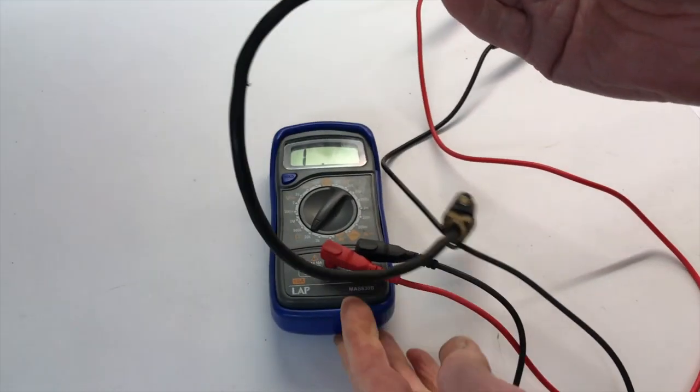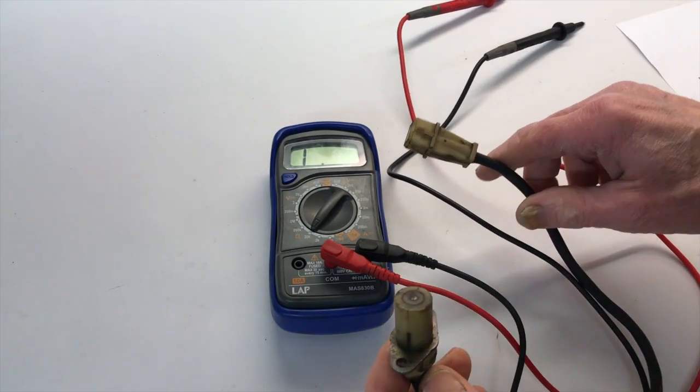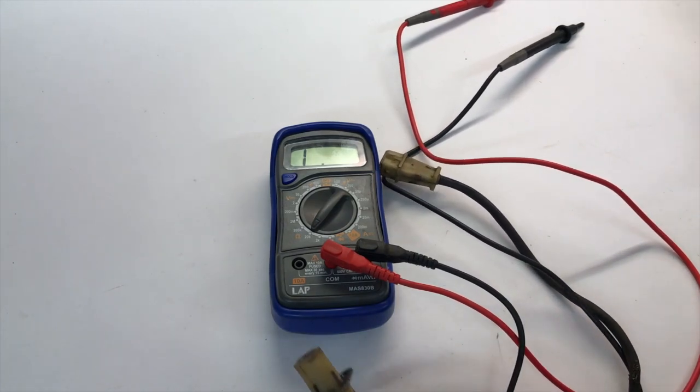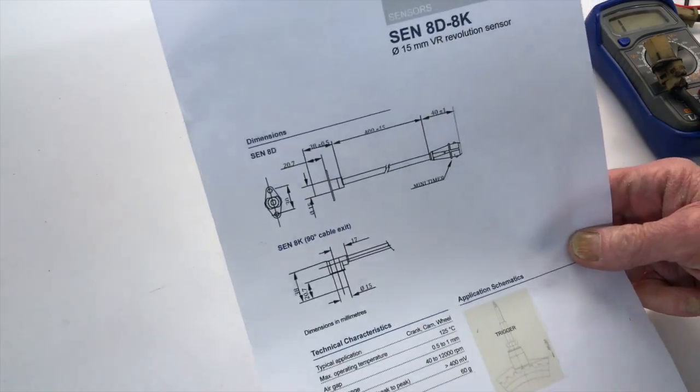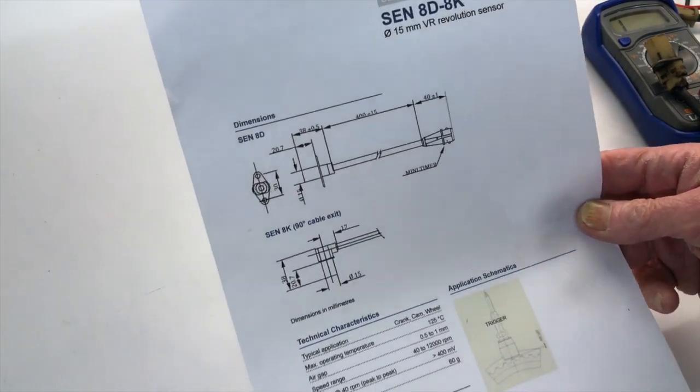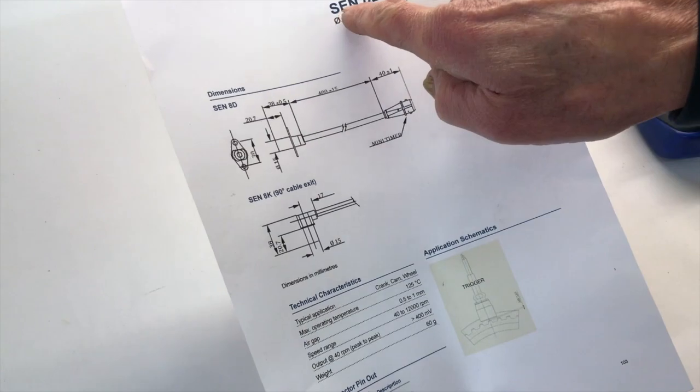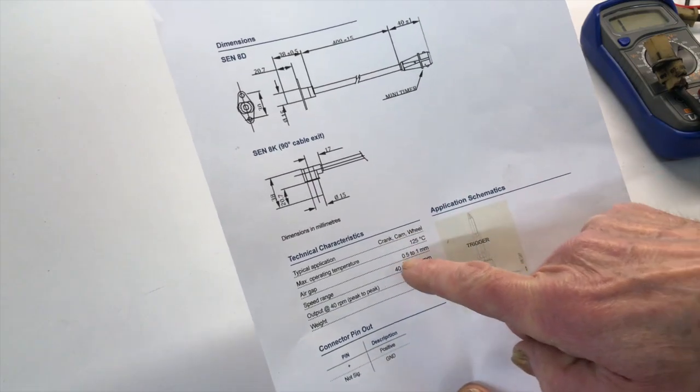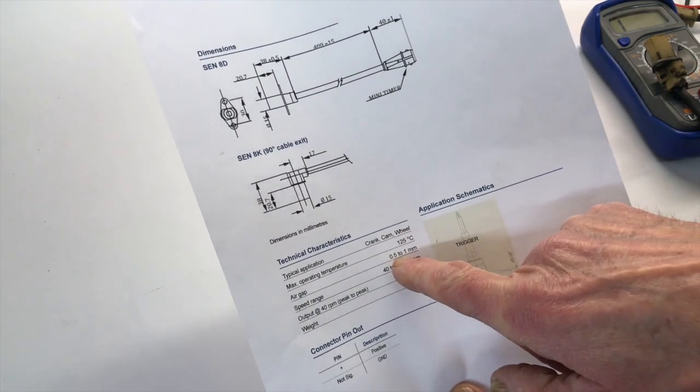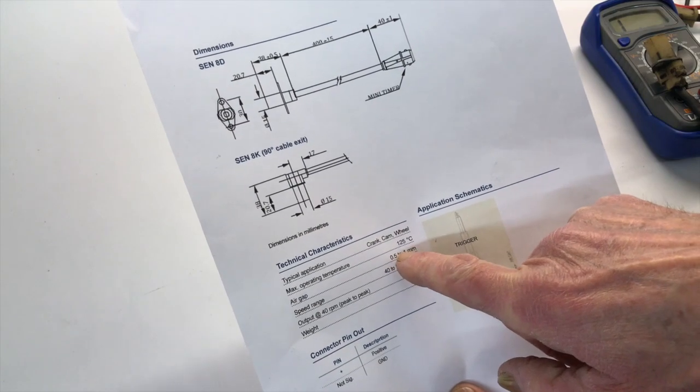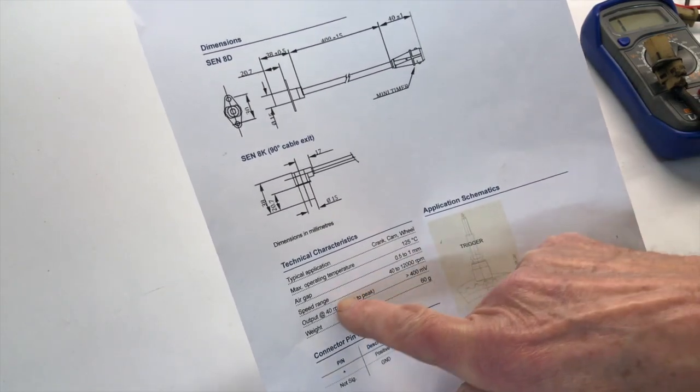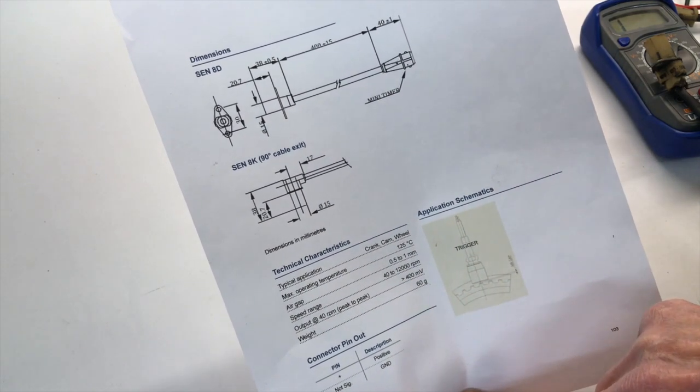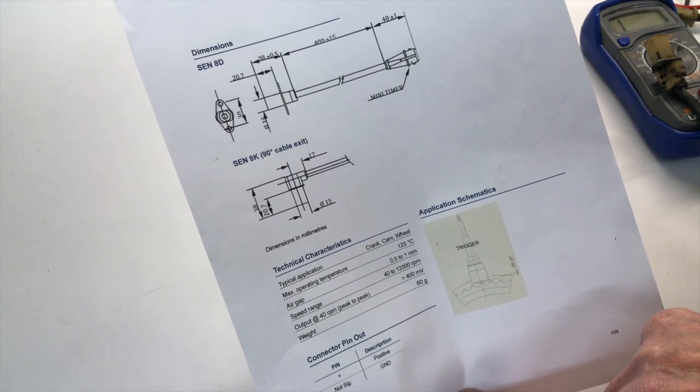Now we can also check the voltage which is created when we pass a piece of metal across there. I've got the spec sheet here downloaded from the Magneti Morelli website. It's an SEN8D sensor. There's all the particulars. Typical application: crank, cam wheel, max operator, air gap. So that's important. That's our air gap that we need, the space between the teeth and the sensor. Speed range output 400 millivolts. So that's 0.4 of a volt.